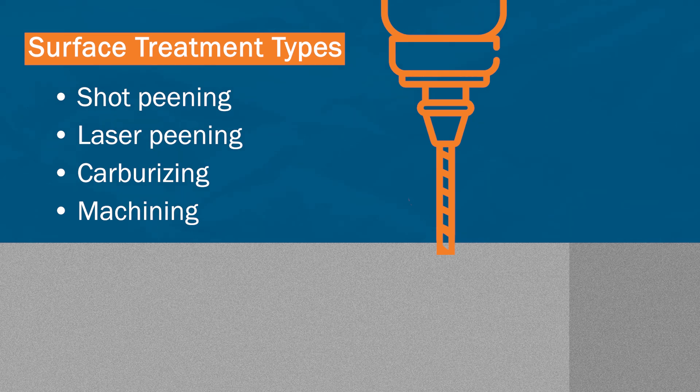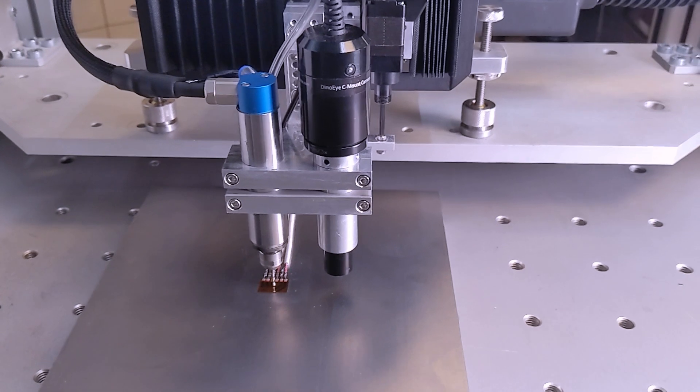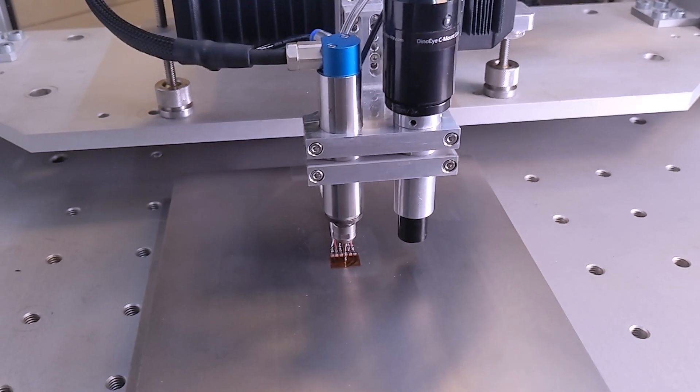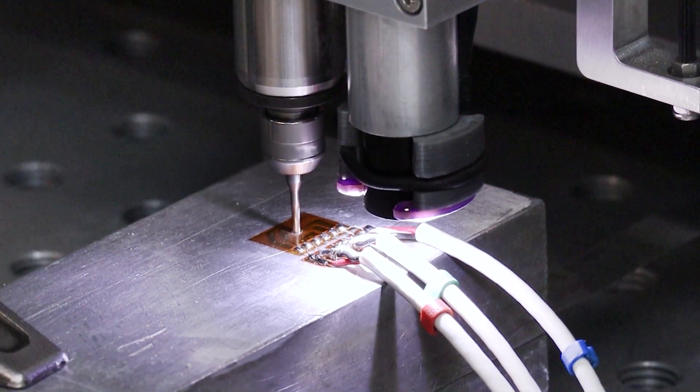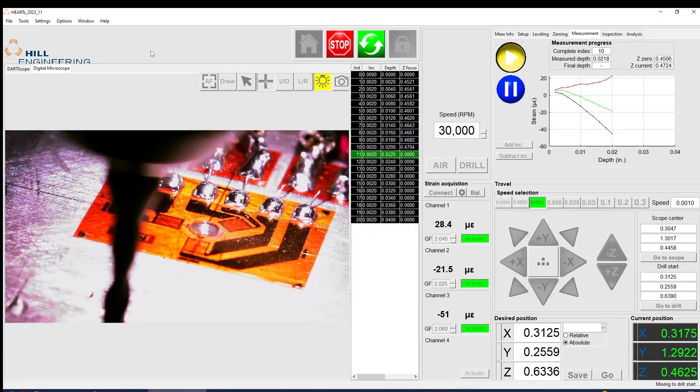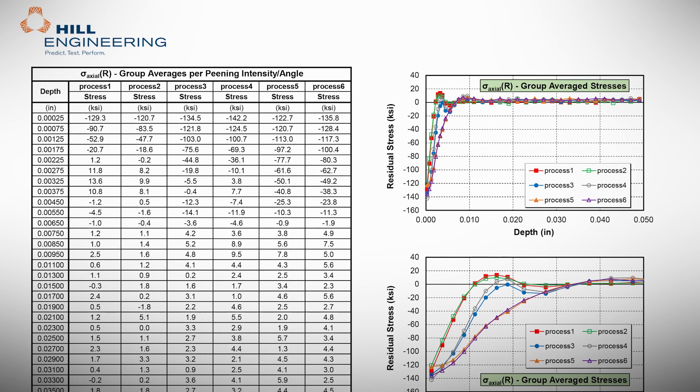Hill Engineering's DART, an automated residual stress testing device, can perform a variety of near-surface measurement techniques, including the hole drilling method. The DART can carry out a full hole drilling measurement and deliver automated results in a quick and efficient manner.